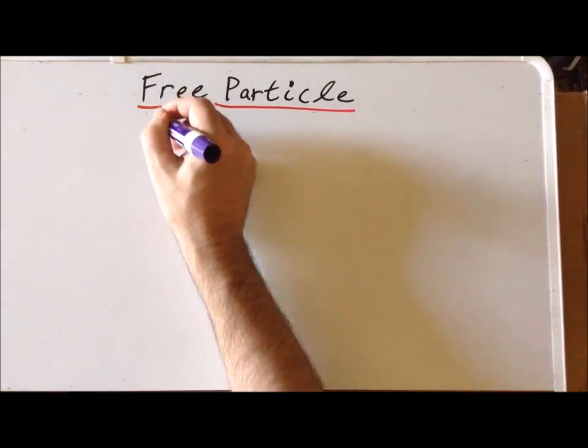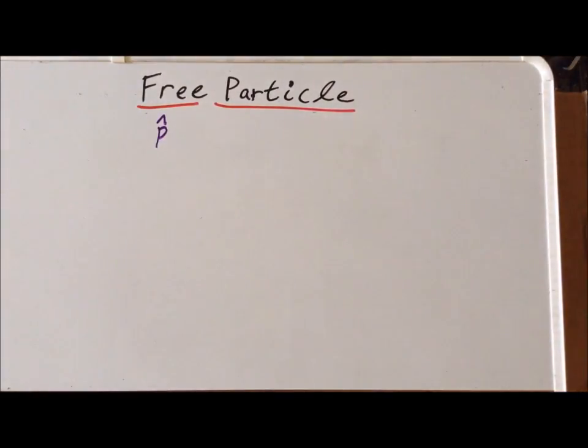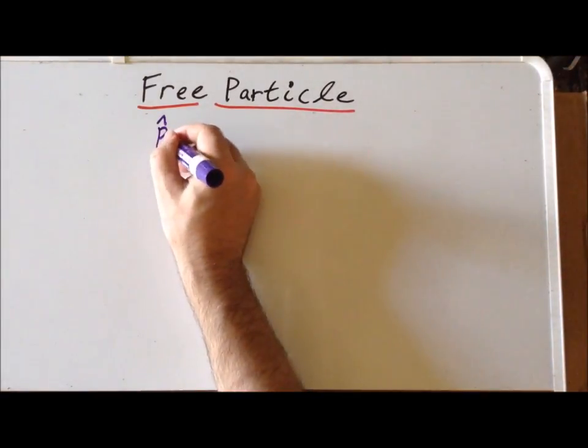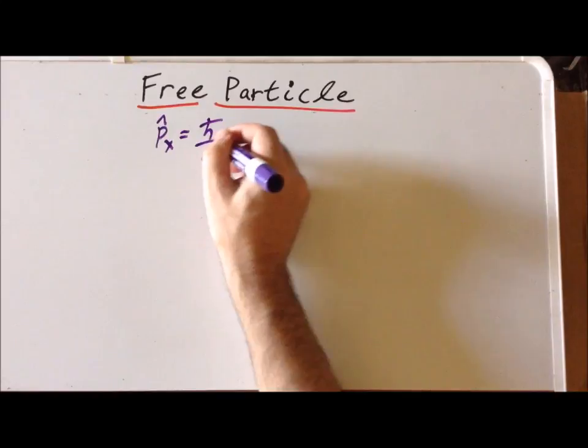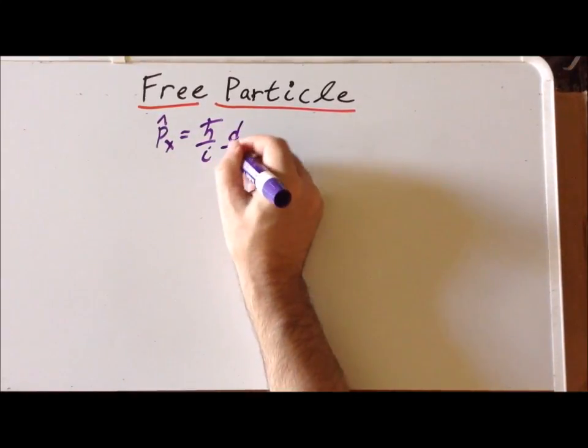Now, recall that the quantum mechanical form of the momentum operator in the x-direction is equal to h-bar over i times the first derivative with respect to x.